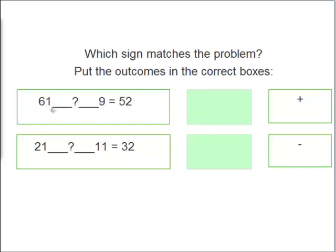How about 61 plus 9 equals 52? Or 61 minus 9 equals 52? Very good. Minus.